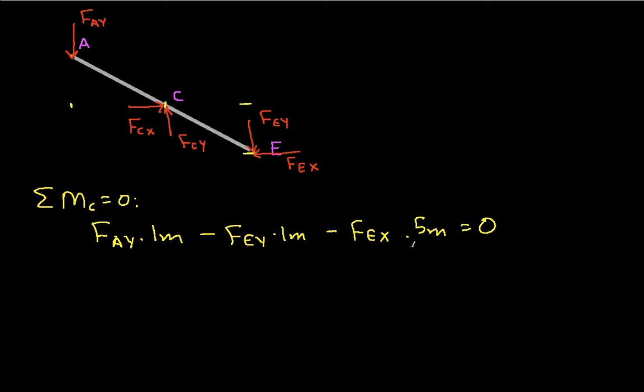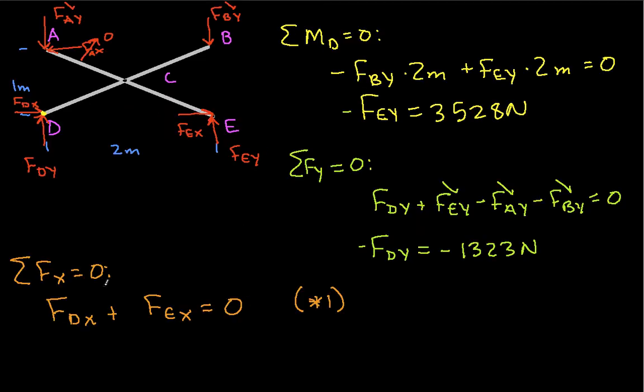And from this, we can then solve for FEX. And this will be minus 9,702 newtons. And now that we have FEX, we can go back to our previous star 1 equation. We now know FEX. That means we can solve for FDX.